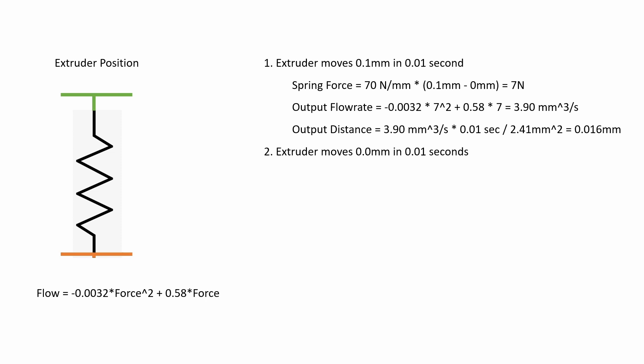So in this case we're not extruding any plastic, or we don't want to, but that spring force is still there. It is slightly reduced because the extruder is holding at 0.1 millimeters, but 0.016 millimeters of plastic has oozed out of the nozzle as shown by this little bit of orange line here.